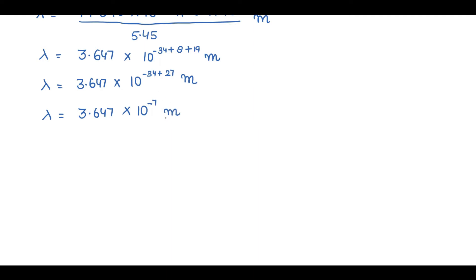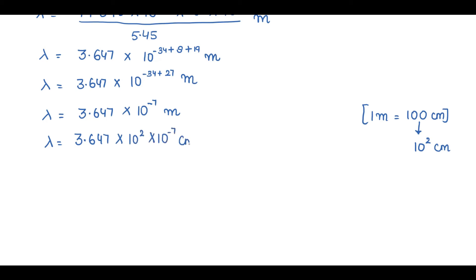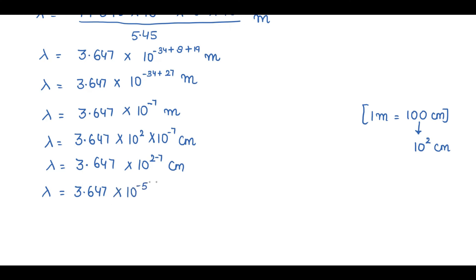We need to express this in centimeters. Since 1 meter equals 100 centimeter, which is 10 raised to power 2, we substitute: lambda equals 3.647 into 10 raised to power 2 into 10 raised to power minus 7 centimeter. Adding the powers: 2 minus 7 equals minus 5. So the wavelength required to exhibit this transition is 3.647 into 10 raised to power minus 5 centimeter.